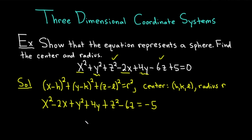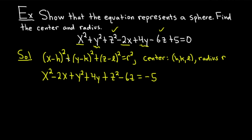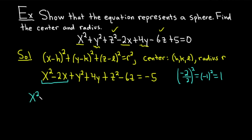Now we're going to complete the square three times — one time for each variable. Let's focus on x squared minus 2x. To complete the square, take the coefficient of x, which is negative 2, divide it by 2, and square it: negative 2 over 2 squared equals negative 1 squared, which is 1. So we add 1 here. We can't just add it on the left — we'll add 1 to the right-hand side when we finish all three.